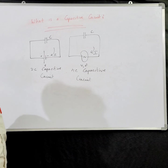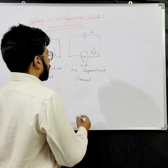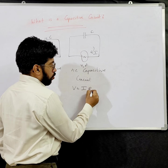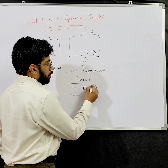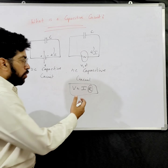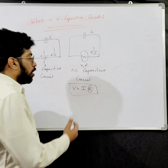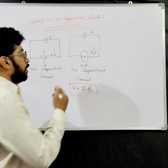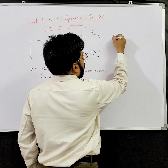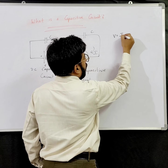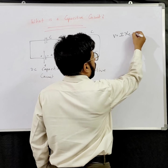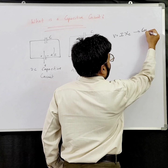Now to solve this capacitive circuit, we cannot apply Ohm's law, as Ohm's law is only limited to resistive circuits. But to apply this kind of formulation, especially in AC circuits, V is equal to I into Xc — that is our capacitive reactance.